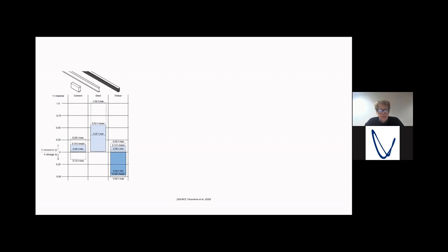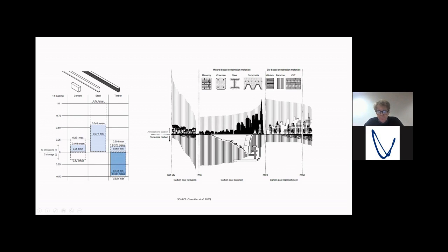We still produce a lot of CO2 emissions. And we can only turn this around by using this dark blue here, which is the carbon dioxide storage potential of timber structures. Here's a very nice graph from a scientific publication that was published last year...